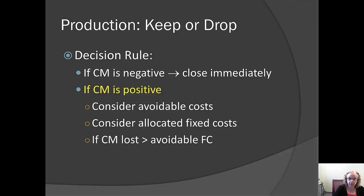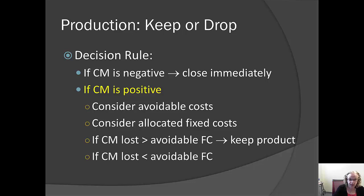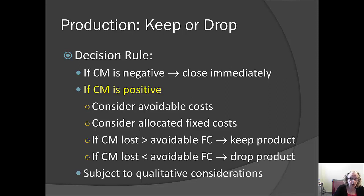If the contribution margin we will lose by stopping production of this product line is greater than all of the avoidable fixed costs, we should probably keep the product. Whereas if the contribution margin we would lose is smaller than the costs we could avoid, we should probably consider dropping the product — subject to qualitative considerations.